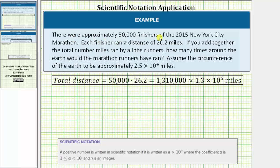There were approximately 50,000 finishers of the 2015 New York City Marathon. Each finisher ran a distance of 26.2 miles. If you add together the total number of miles ran by all of the runners, how many times around the earth would the marathon runners have ran?